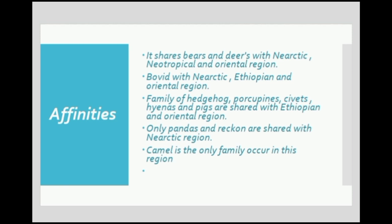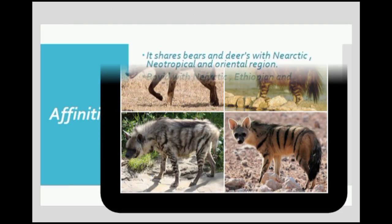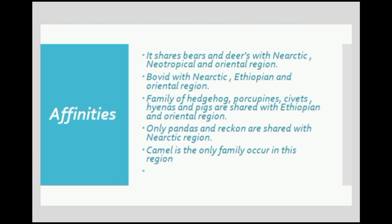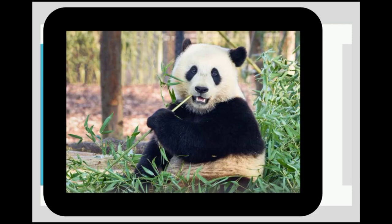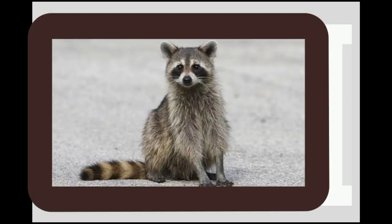The family of hedgehogs, porcupines, seabirds, hyenas, and pigs are shared with the Ethiopian and Oriental regions. These organisms are present in the Palaearctic region and also in the Ethiopian and Oriental regions. So some animals are similar across multiple zoogeographical regions, while most differ between the six regions.